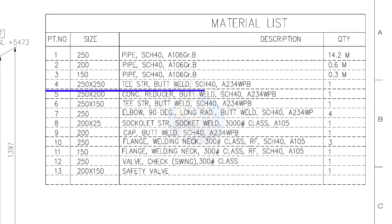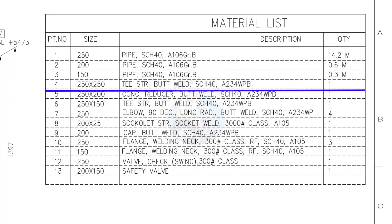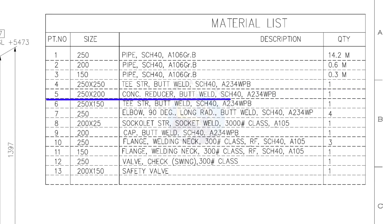Item number 4: 250 into 250 straight T, butt welded, schedule 40. Quantity is 1. Item number 5: 250 into 200 concentric reducer, butt welded, schedule 40. Quantity is 1.